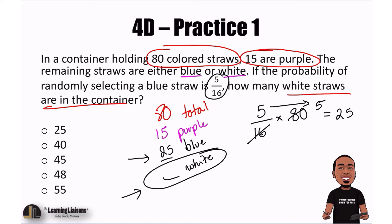So with that said, we can now figure out how many white there are. Because we have 15 here for purple, 25 for blue, the rest are white. If there are 80 total, how many left?